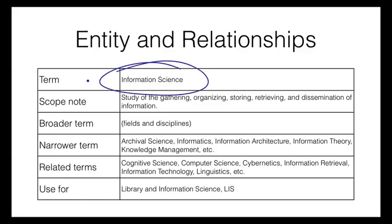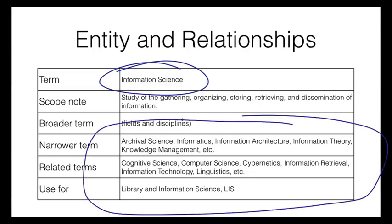The ASIST thesaurus has provided you with a bunch of what are considered related fields and disciplines in one way or another. All of these fields and disciplines: Archival science, informatics, cognitive science, linguistics, et cetera. And let's just ignore for the moment the broader term, narrower term, related term relationships and just say ASIST says that these fields are related to information science somehow.